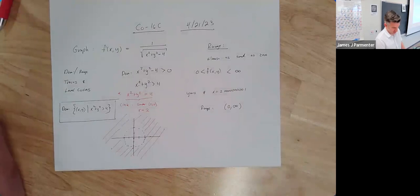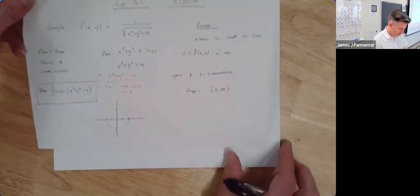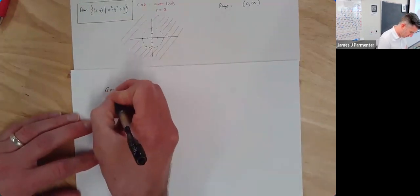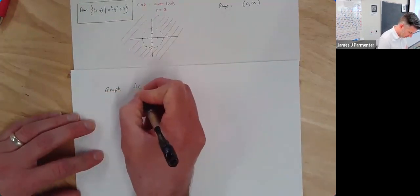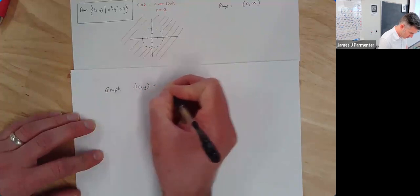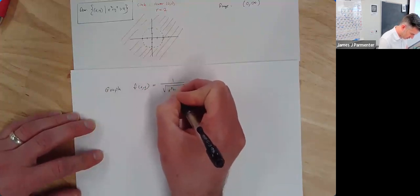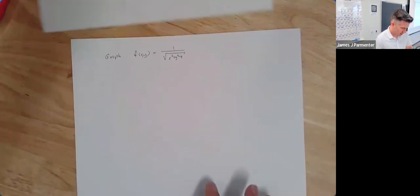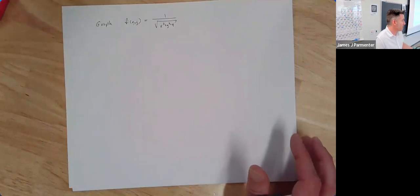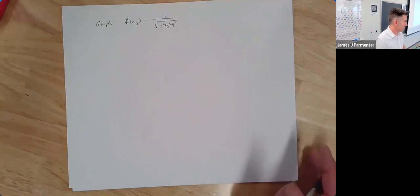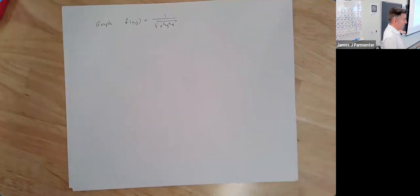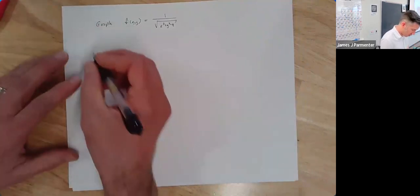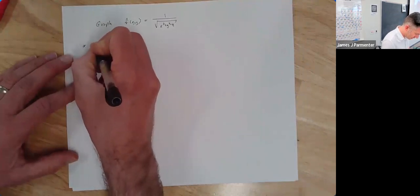Now let's talk about the actual graphing part. I'll start by pointing out that there is no trace in the xy-plane. The trace in the xy-plane is non-existent because if we let z equal zero, this doesn't have a solution — zero is not in the range. So there's no trace in the xy-plane.